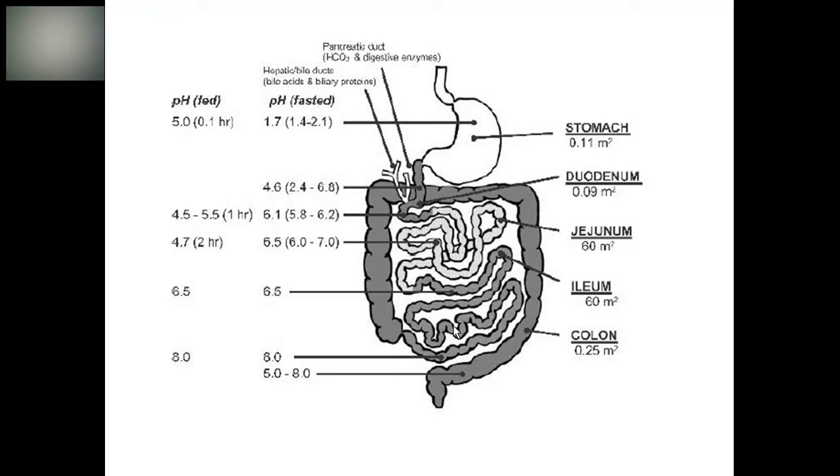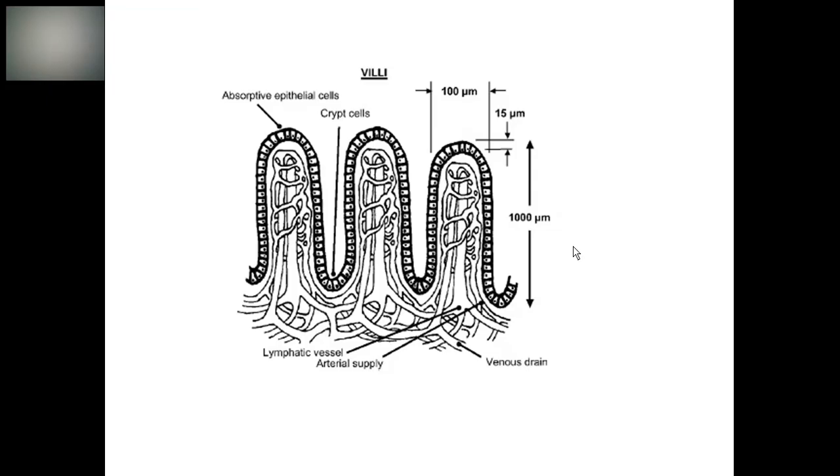Absorption is enhanced or facilitated by finger-like projections which increase the surface area of absorption. The jejunum or ileum has a surface area of around 60 meter square due to the finger-like projections and foldings of the inner lining of the lumen which we call villi.